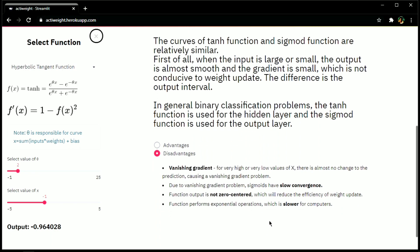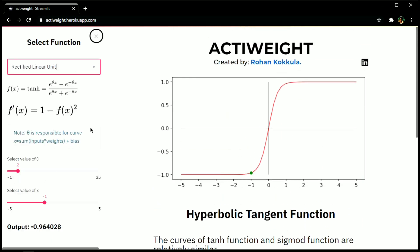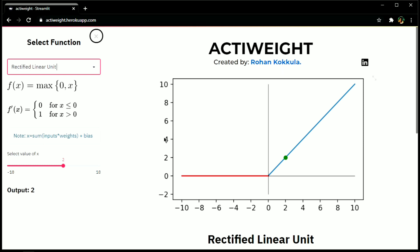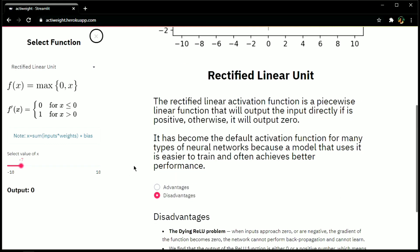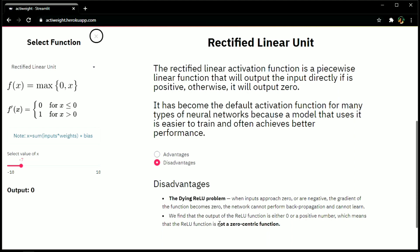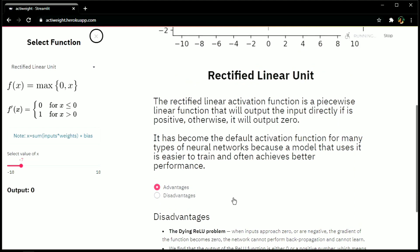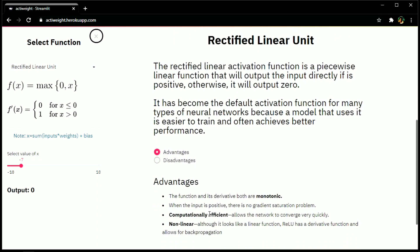The third activation function is rectified linear unit. Let me put in simple terms. If your value of x is greater than 0, then output will be x and if it is less than 0, then output will be 0. So no matter what your value is beyond 0, if your value is x, then output will be x. But if your value is negative, output will be 0, which means the neuron is dead for all the negative values, which contributes to the disadvantage, the dying relu problem. Also it is not a zero-centric function. Advantages are function and its derivative both are monotonic, it is computationally efficient, and it is non-linear.